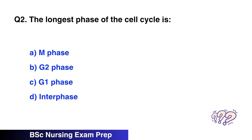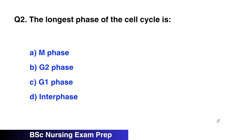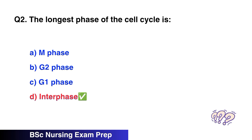Question 2. The longest phase of the cell cycle is? The correct option is D, interphase.